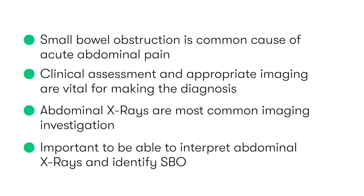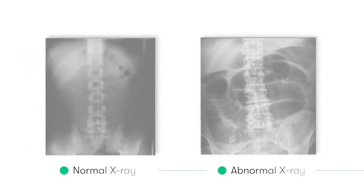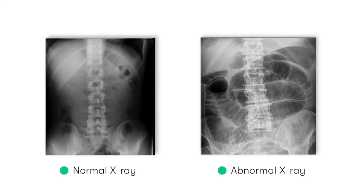At the end of this video tutorial, that's exactly what you'll be able to do. Here, you can see a normal x-ray on the left hand side and an abnormal x-ray showing small bowel dilatation on the right hand side. We should be able to instantly appreciate that there's a significant difference between the two images.